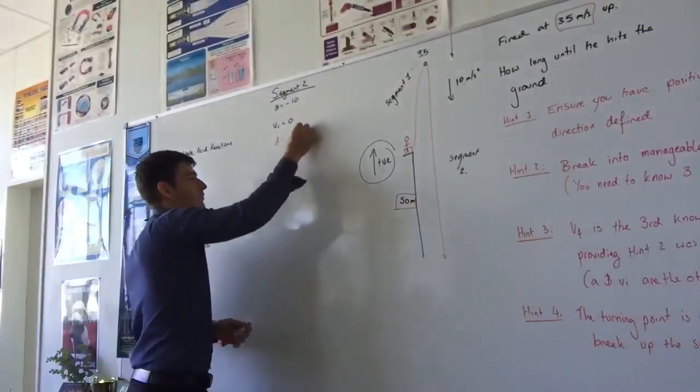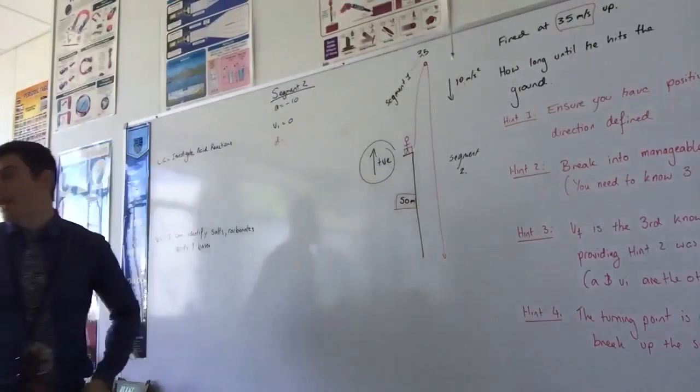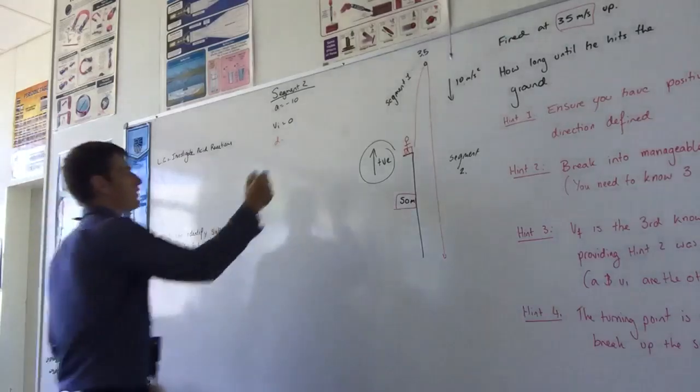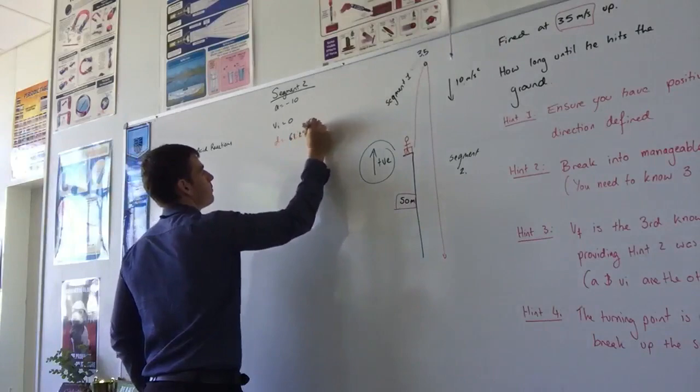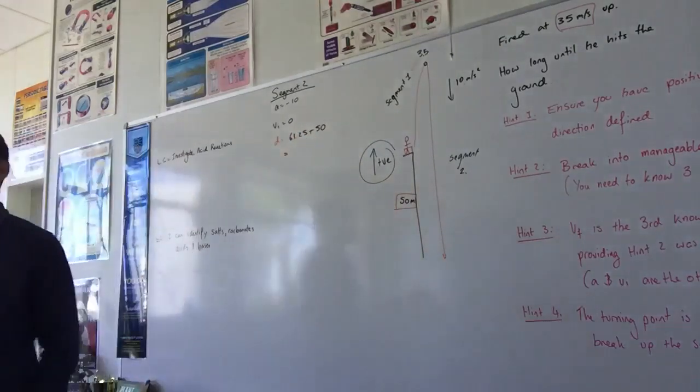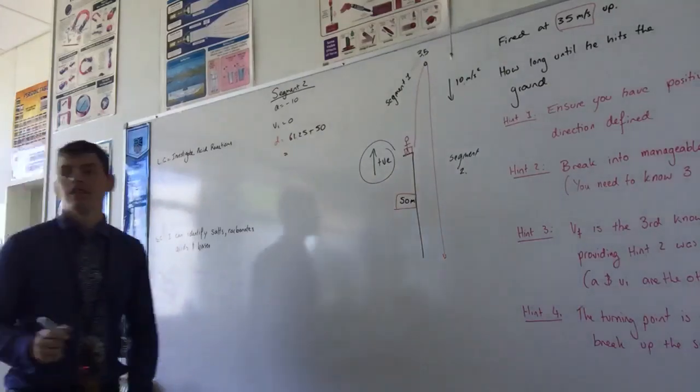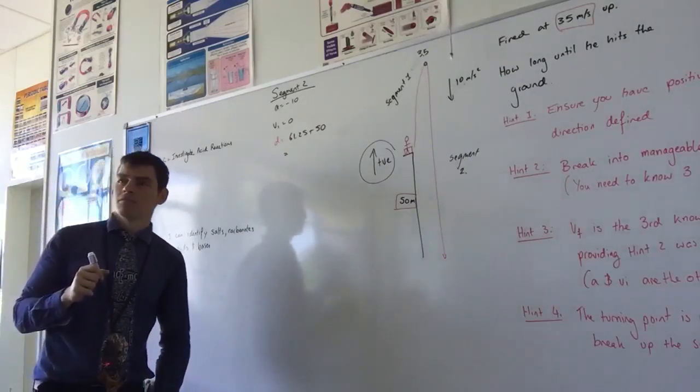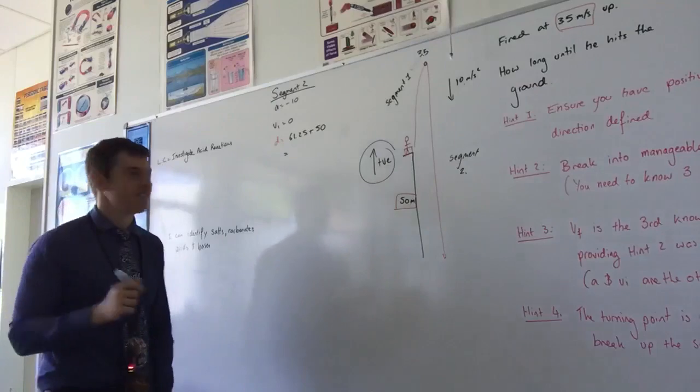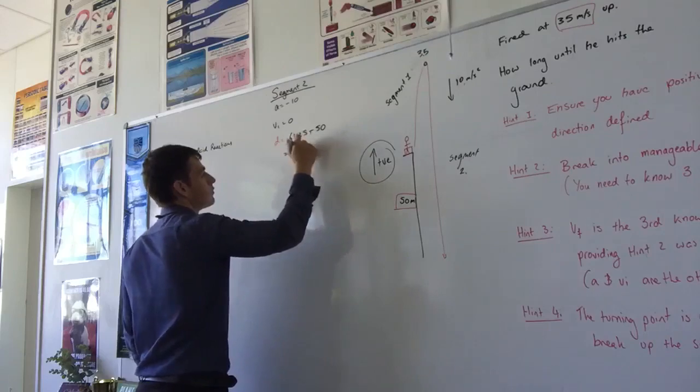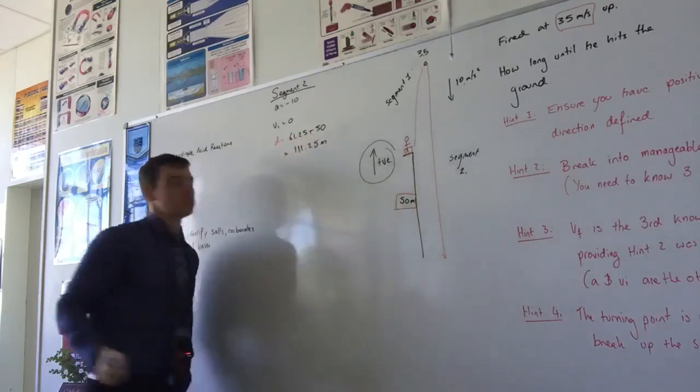What's the third thing we know? Distance. And this is where the 50 comes back. Add the 50. So now we've got 61.25 plus 50. 35 meters per second is like 100 kilometers an hour. It's quicker than 100k an hour. If you shot something up at 100k an hour, would you expect it to go? Well, it's pretty quick.